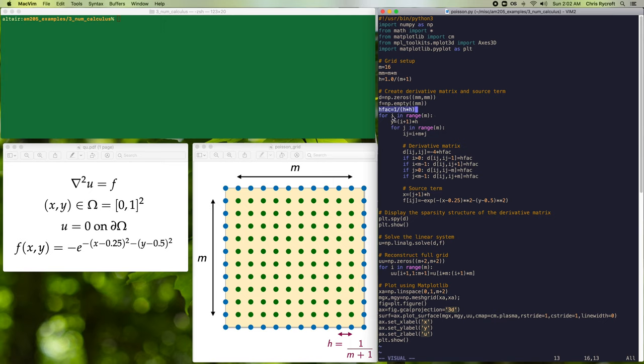We'll then loop over all of the grid points i, j in the interior of our grid. And we'll compute the corresponding vector index ij which is equal to i plus m times j. We'll then set the entries in the ij-th row of the derivative matrix. So on the diagonal, we'll have a term of size minus 4 times h fact. And then we'll have up to 4 additional off diagonal entries corresponding to the 4 orthogonal neighbors of the current grid point.